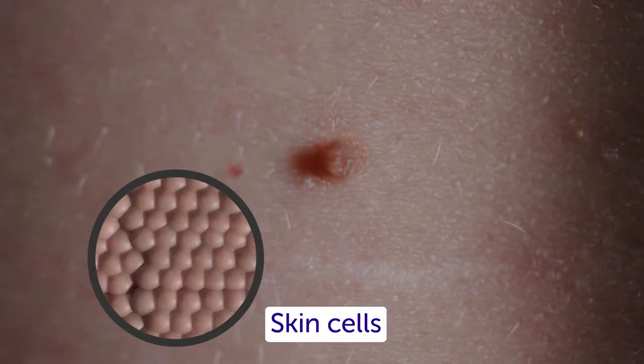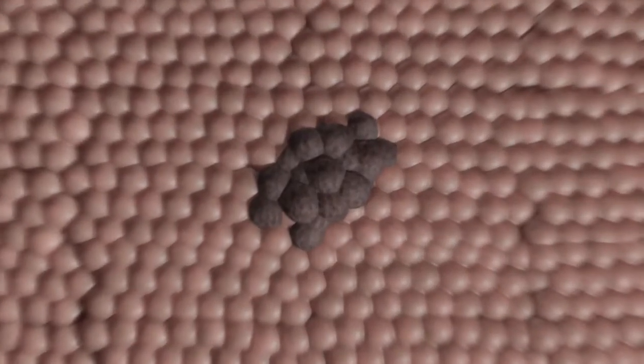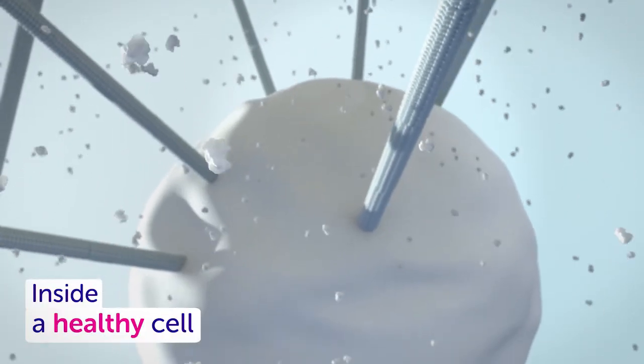Our bodies are made of cells, and cancers start when they grow out of control. This happens when the molecules inside the cells misbehave.